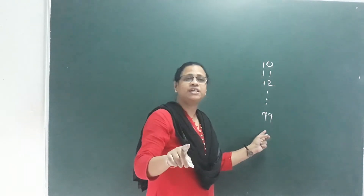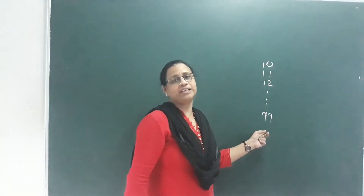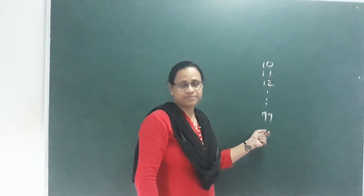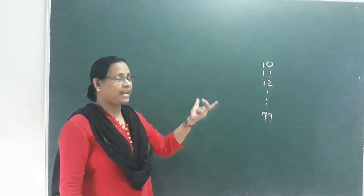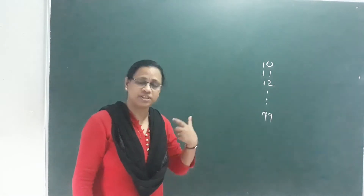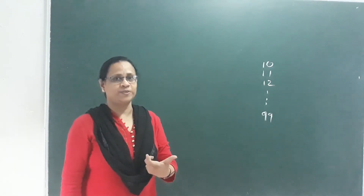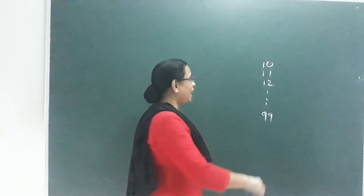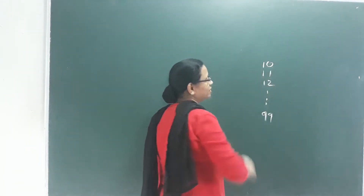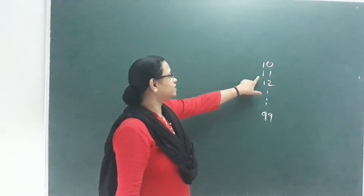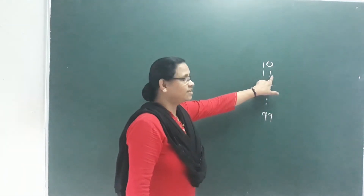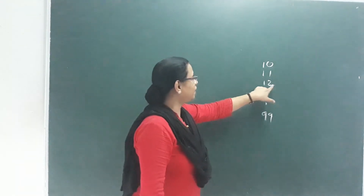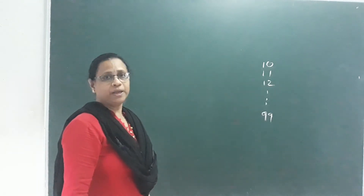We need the product of the digits to be a prime number. For example, consider a number — its digit product may or may not be prime.